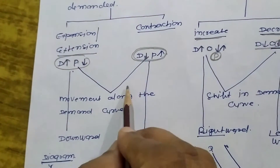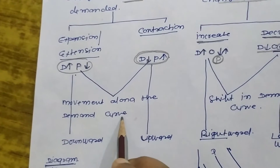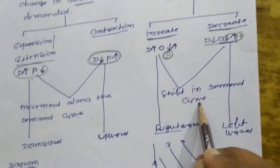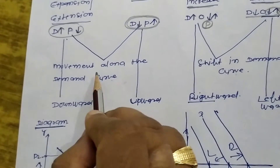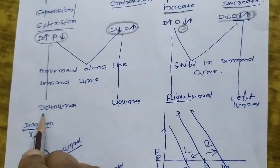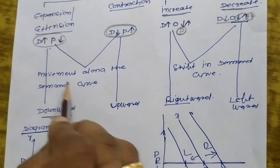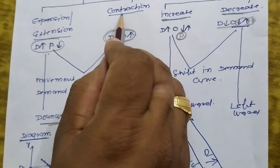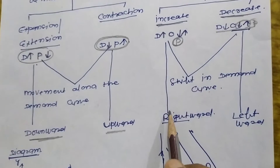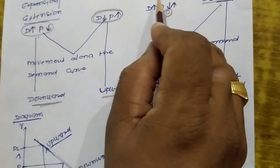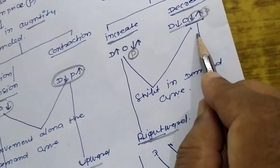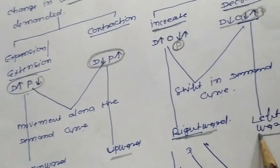In case of change in quantity demanded, there is a movement along the demand curve. And in case of change in demand, there is a shift in the demand curve. Movement along the demand curve in case of expansion is downward. Movement along the demand curve in case of contraction is upward. In case of increase in demand, the curve shifts rightward. In case of decrease in demand, it shifts leftward.